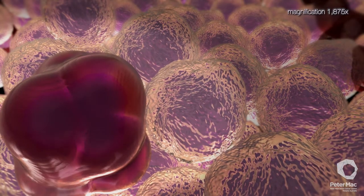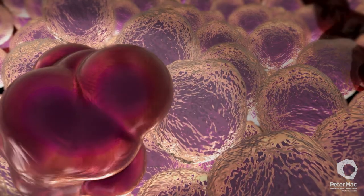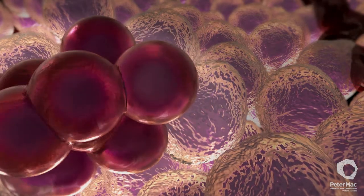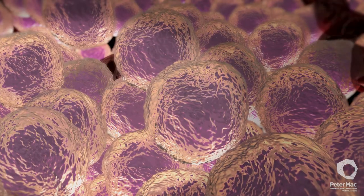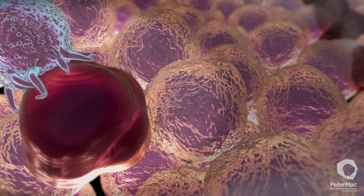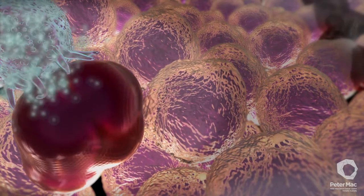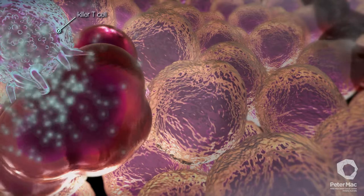If the DNA damage is too great to be repaired, then the cell is destroyed through a specialized form of cell death called apoptosis. Alternatively, it can be removed by cells of the immune system known as killer T cells, which recognize the damaged cell and then destroy it.